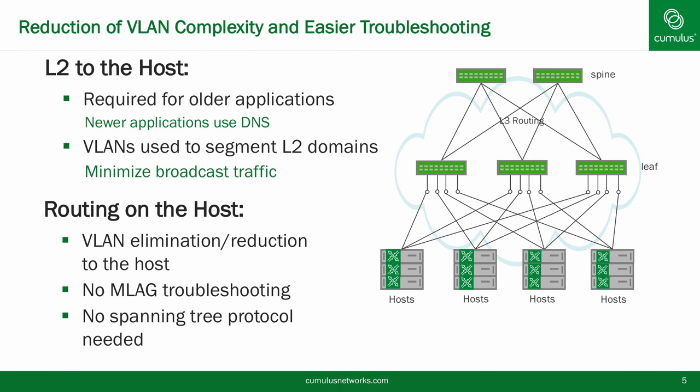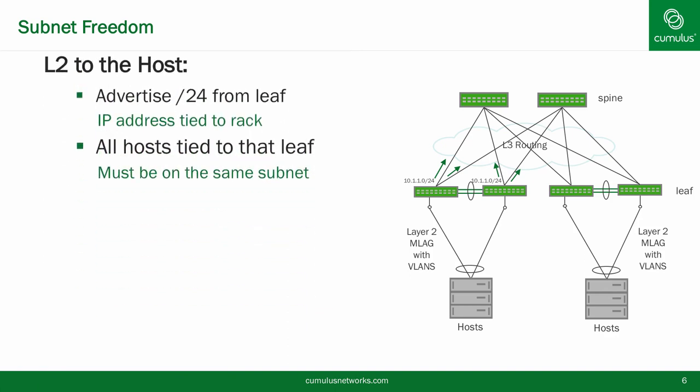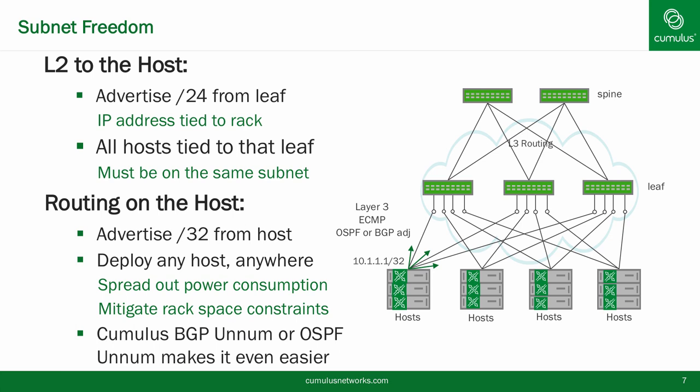Additionally, since we advertise the host's IP address as a /32 into the routing domain, we can move the host wherever they need to go and keep the same IP address. Another benefit is subnet freedom. In the past, we had to tie an IP address to a rack, but by routing on the host, this is no longer required and we can deploy any server anywhere with any IP address. This also allows us to move hosts without changing the IP address, and with Cumulus Quagga supporting BGP or OSPF unnumbered, it makes the configuration for such a change non-existent.